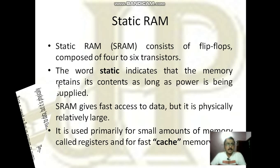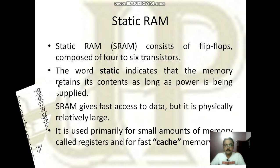What is static RAM? Static RAM consists of flip-flops composed of 4 to 6 transistors. A flip-flop is the smallest unit to store one bit of information. The word static indicates that the memory retains its contents as long as power is being supplied, so there is no need to refresh again and again. SRAM gives fast access but is large in size, and that is why it is primarily used in registers within the CPU and for cache memory.